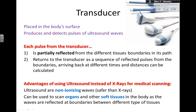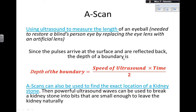Now we have a non-ionizing method. If a person needs to check a damaged ligament, or sensitive organs like kidneys, or to check for babies, you use ultrasounds because they are non-ionizing and therefore safer. Also, because they are partially reflected, they give you a good image.